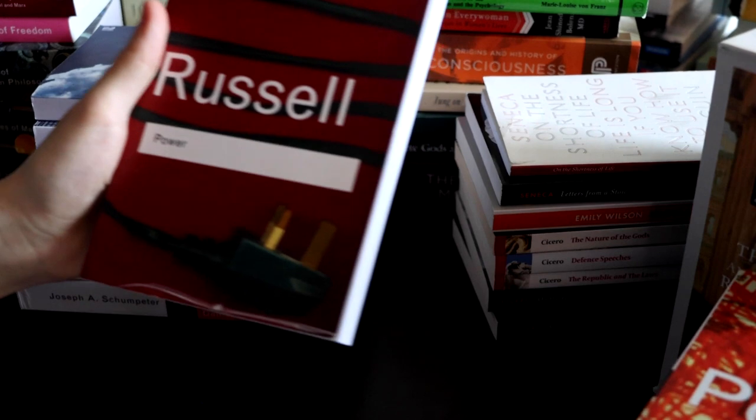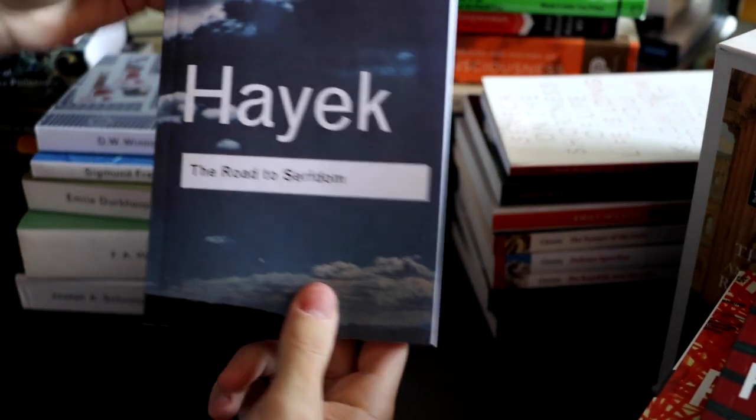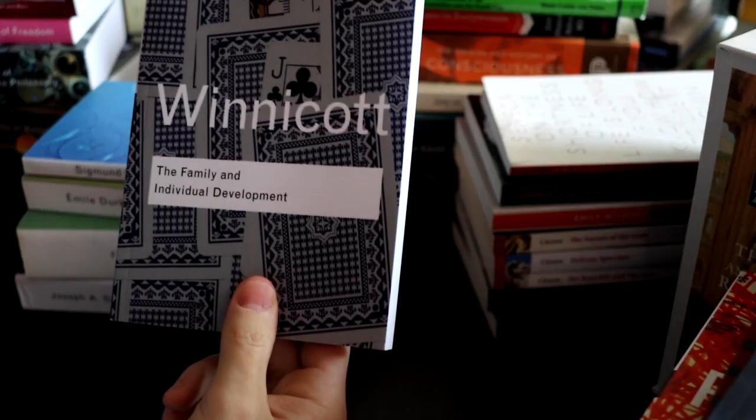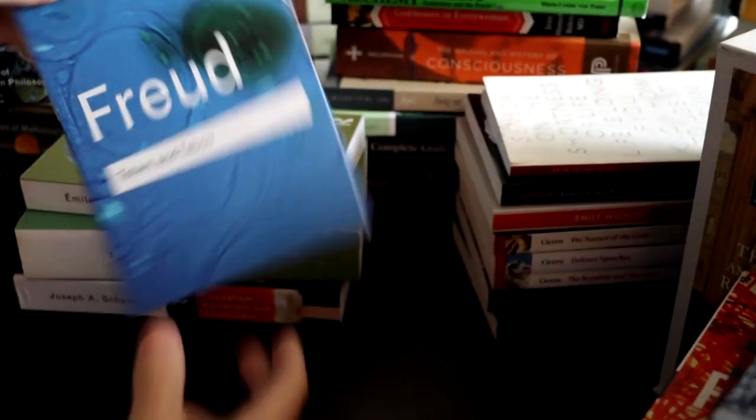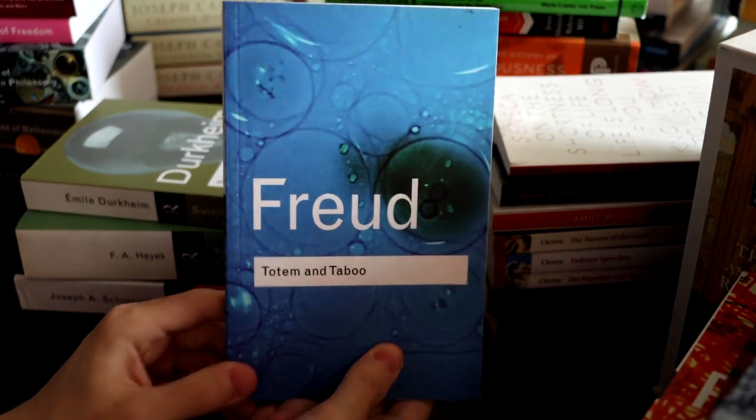The next one is Power by Russell. The Road to Serfdom by Hayek. Family and Individual Development by Winnicott. I don't know how to say his name. This is a good psychology book. Sigmund Freud, Totem and Taboo.